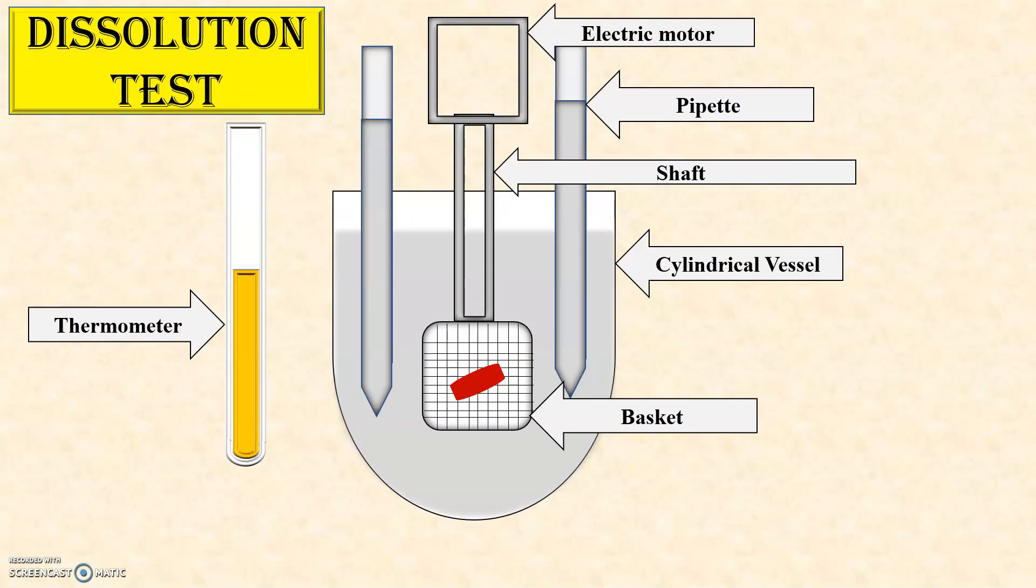This is the diagram of dissolution test apparatus, which consists of a cylindrical vessel with dissolution medium, electric motor with shaft attached to the basket containing the tablet, thermometer to check the temperature, and pipettes for withdrawing the samples.